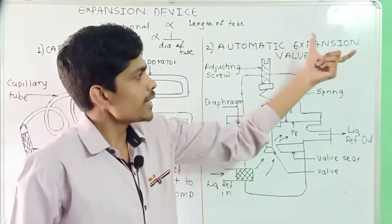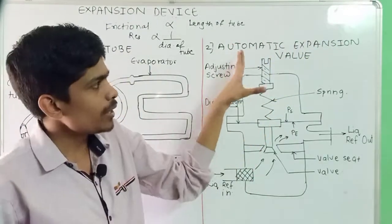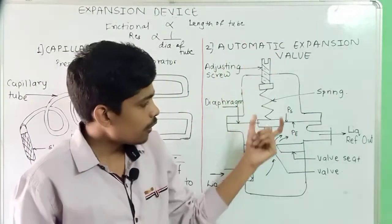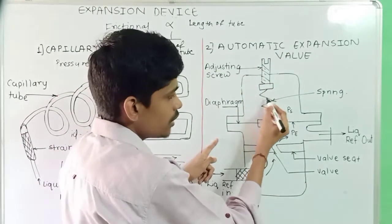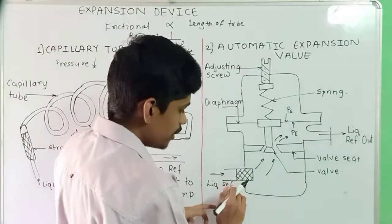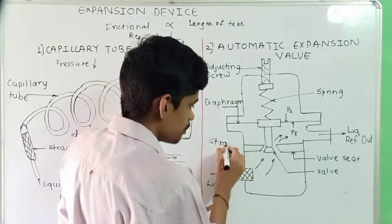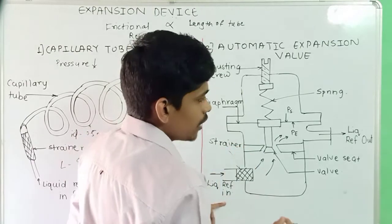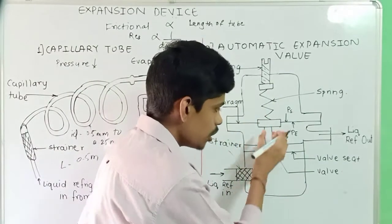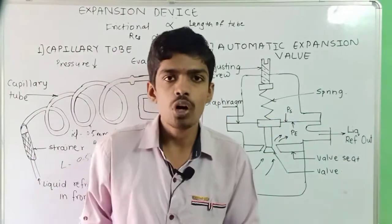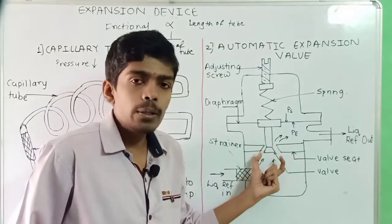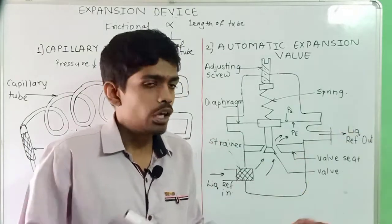Next is the Automatic Expansion Valve. It will be operated automatically. This is the valve — we can see the adjusting screw, the spring, and the diaphragm at the center. This is a needle valve; liquid refrigerant enters here and there is a strainer. The liquid refrigerant will go out to the evaporator. The opening and closing of this valve depends upon the pressure change in the evaporator.